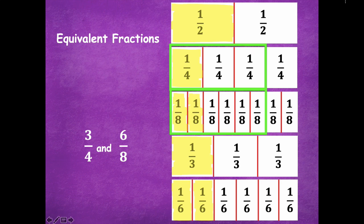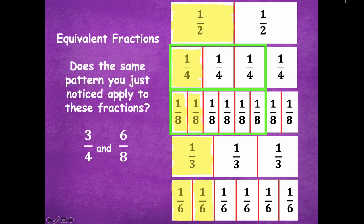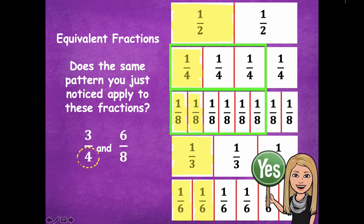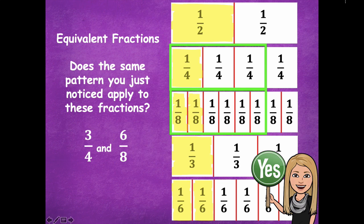Here we have three-fourths and six-eighths — those are also equivalent. Does the pattern you noticed apply to these fractions too? Yeah, it sure does. Four is half of eight, and three is half of six. Because we're taking those smaller ones and partitioning them into more pieces, we're able to say that those are equivalent fractions.